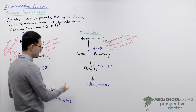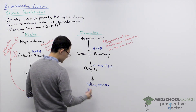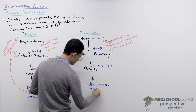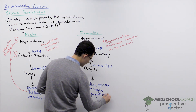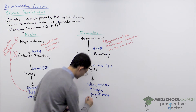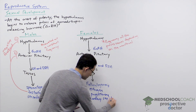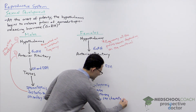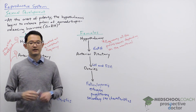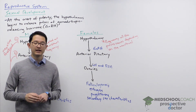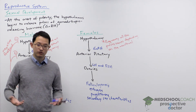In addition, LH and FSH acting on the ovaries and leading to maturation of the follicle also results in the release of estrogen and progesterone. Estrogen is important because it results in the development of secondary sex characteristics of females, which include the development of hair in different parts of the body, the growth of breasts, the widening of the hips, and additional changes.